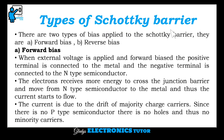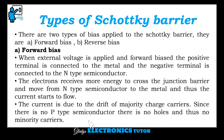There are two types of bias applied to the Schottky barrier: forward bias and reverse bias. In forward bias, the positive terminal is connected to the metal and the negative terminal is connected to the n-type semiconductor. The electrons receive more energy to cross the junction barrier and move from the n-type semiconductor to the metal, and thus current starts to flow. The current is due to the drift of majority charge carriers; since there is no p-type semiconductor, there are no holes and thus no minority carriers.